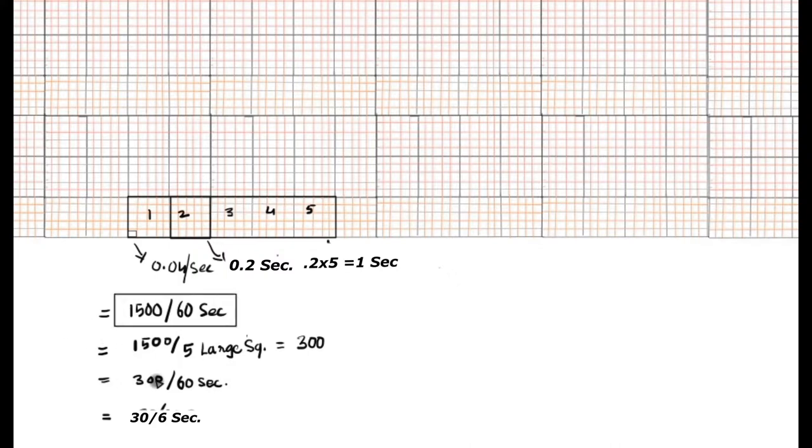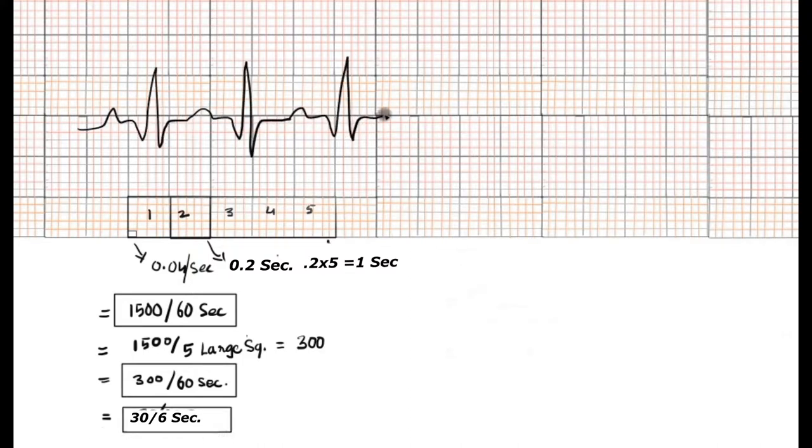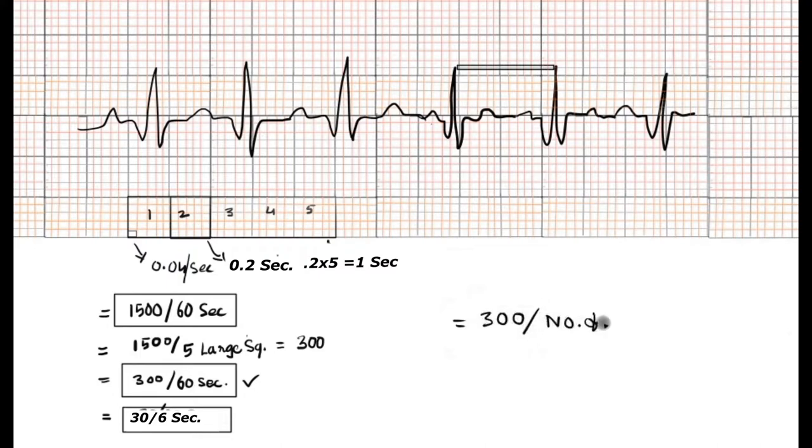We can calculate the rate and rhythm based on three methods: 1500 upon 60, 300 upon 60, and 30 upon 6. To calculate the rate or rhythm from an ECG, we count how many large and small boxes are covered between two RR intervals.